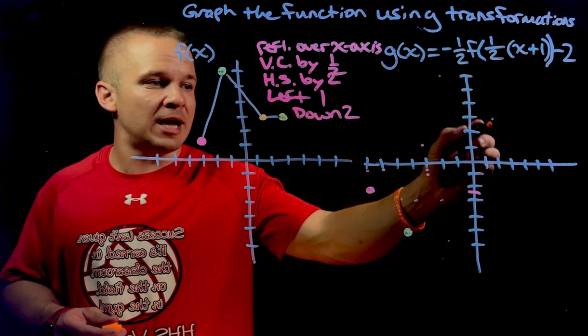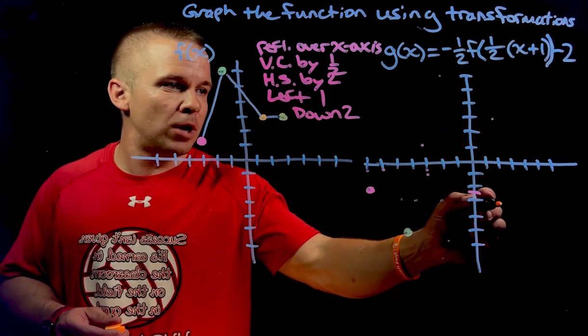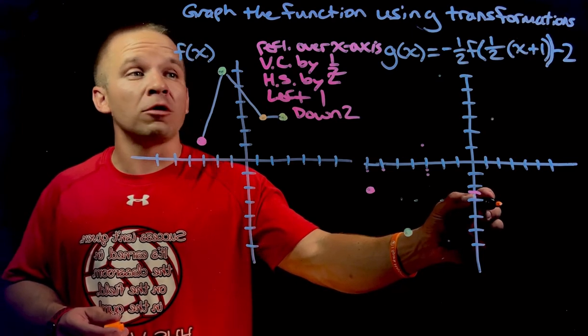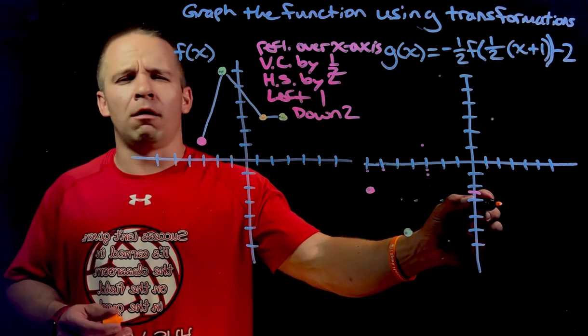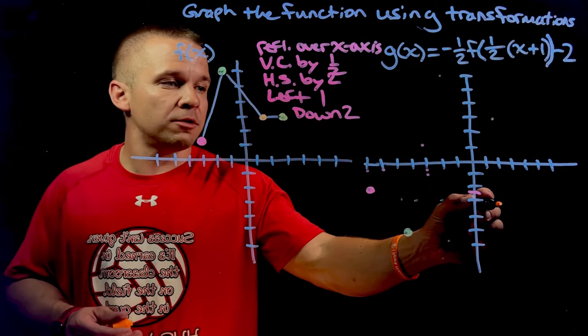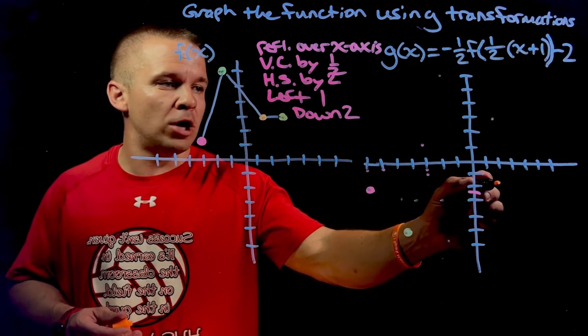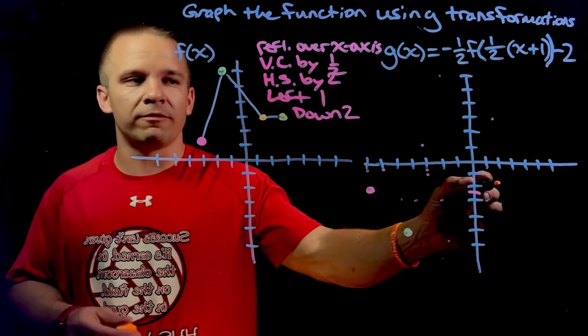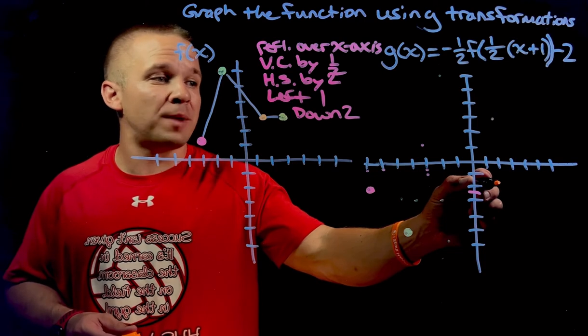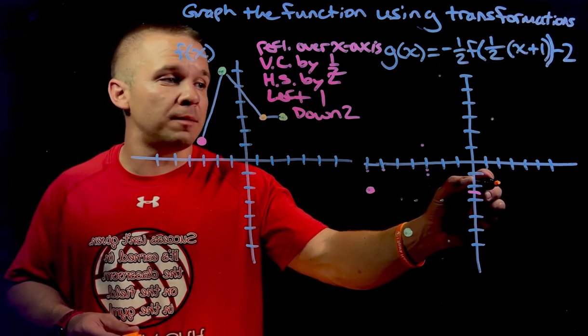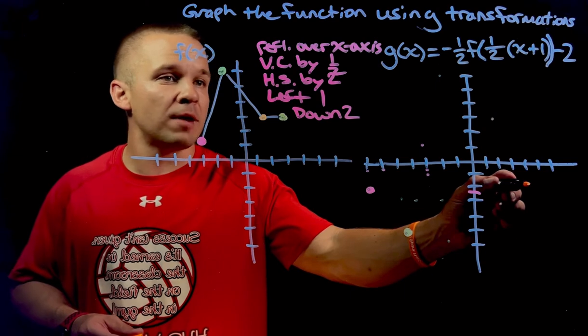So I'm going to reflect over the x-axis. I'm going to be at negative three. Boom. Then I'm going to do a vertical compression by one half. Oh, that's awful, but that's okay. We're going to be at 1.5. Boom. Three divided by two, it's 1.5. Then I got to do a horizontal stretch by two. So I'm currently at positive two, multiply that by two. I'm going to be at positive four. That'll put me right here.